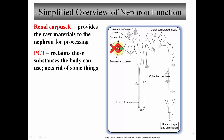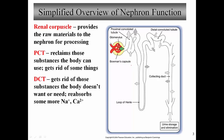The proximal convoluted tubule is specialized for reabsorption. It reabsorbs about 65% of all the volume of filtrate that passes through it — that's really its main job. It does have some capability for secretion as well. If we have blood vessels here, we're basically taking material from the blood vessels and moving them back into the tubules — that's the process of tubular secretion. The PCT can carry out secretion, but its main job is reabsorption.